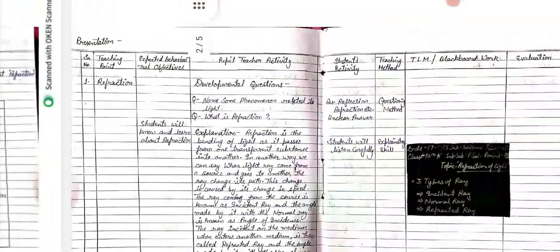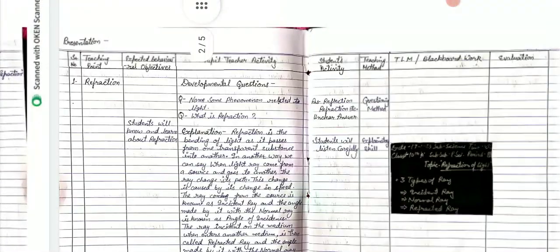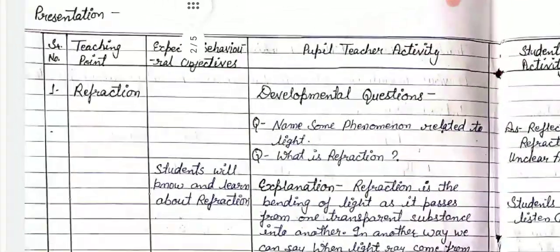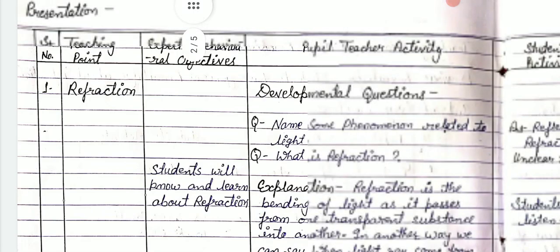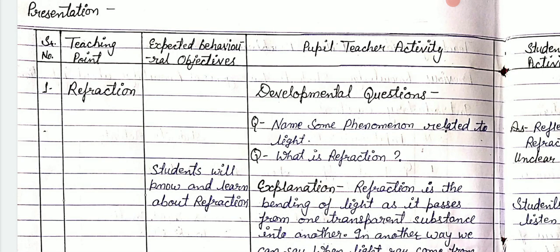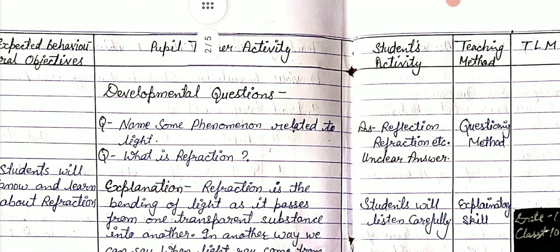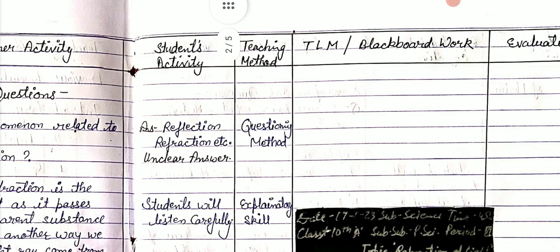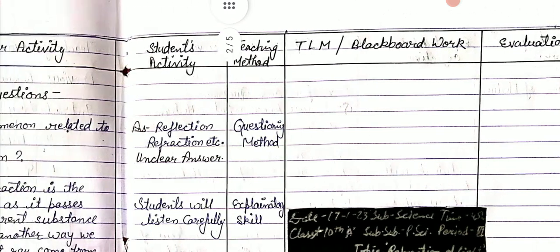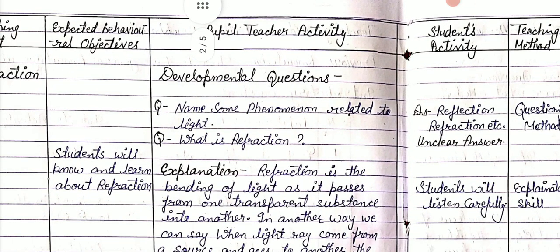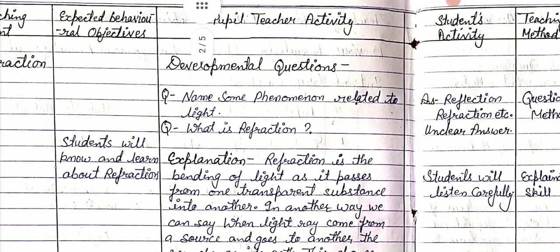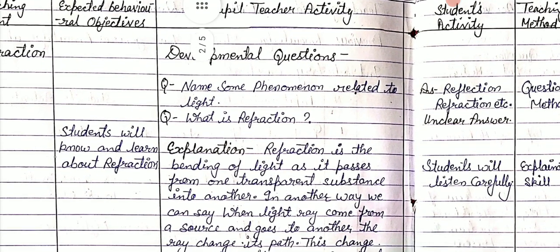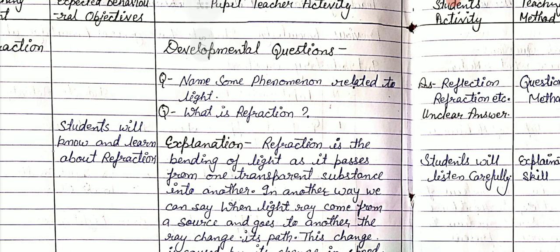After the statement of aim we present our topic heading — presentation. We make some columns: serial number, teaching points, expected behavioral objectives, pupil-teacher activity, student activity, teaching method, TLM, blackboard work, and evaluation.